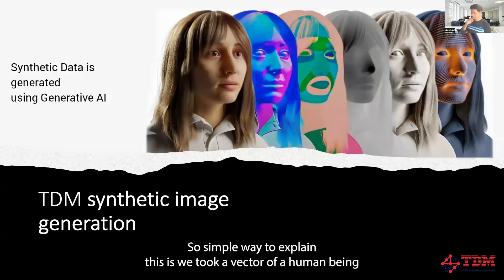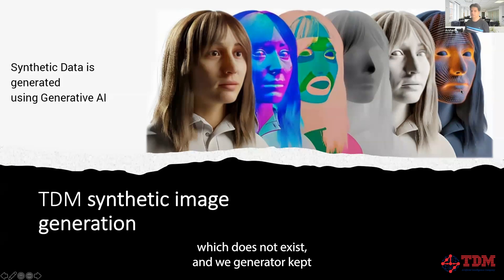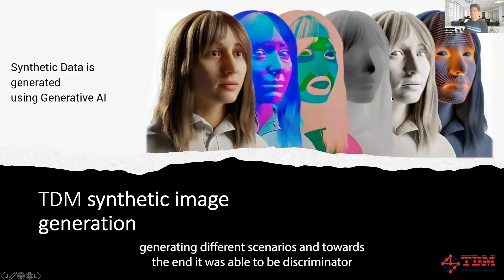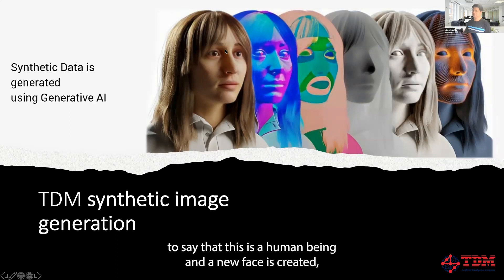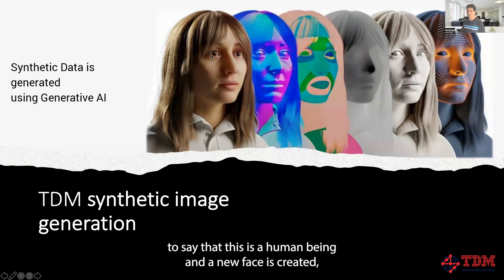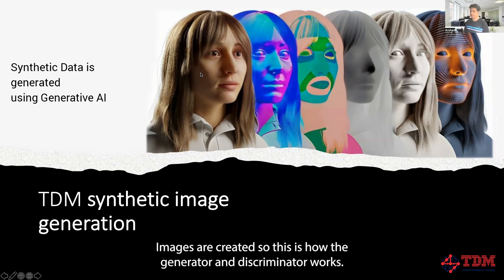A simple way to explain this: we took a vector of a human being that does not exist, the generator kept generating different scenarios, and towards the end it was able to beat the discriminator to say this is a human being — and a new face is created which is not an existing human being but a synthetic one. This is how fake images are created. This is how the generator and discriminator work.